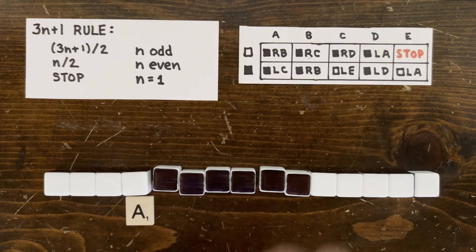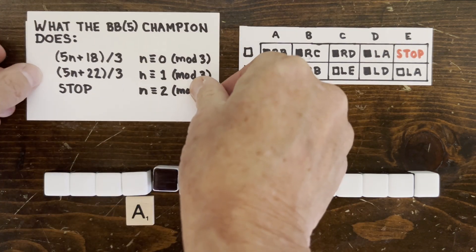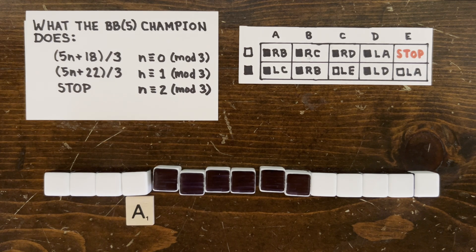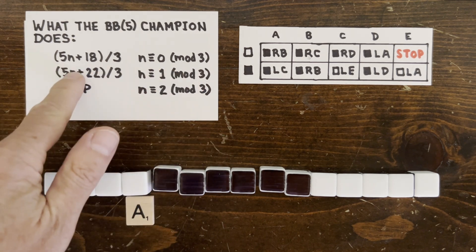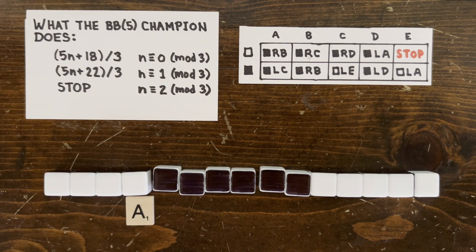Okay, just kidding. But the answer is close. It actually computes this 3n plus 1-like rule. You start with a number n. If it's divisible by 3, replace it by (5n + 18)/3. If it has a remainder of 1, replace it with this. Otherwise, stop.